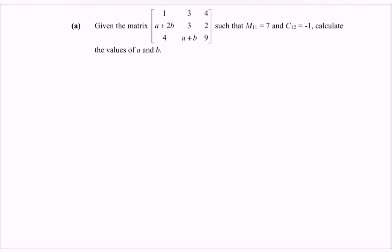Hello everyone. In this video I'm going to discuss the example for matrices. Given the matrix of 3x3 order, we have M11 which is equal to 7, and C12 which is equal to negative 1. Calculate the value of A and B.